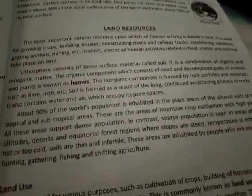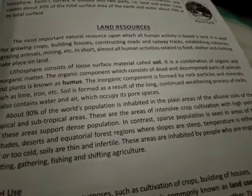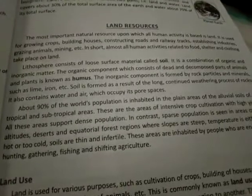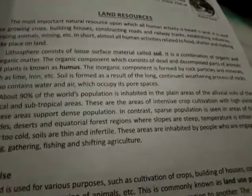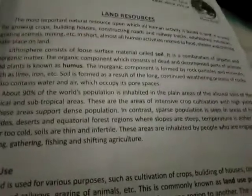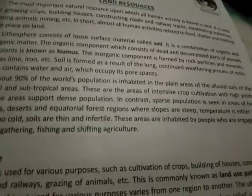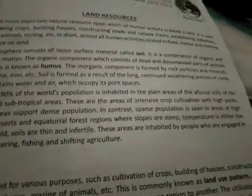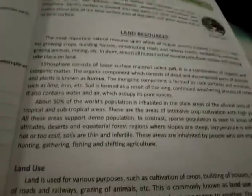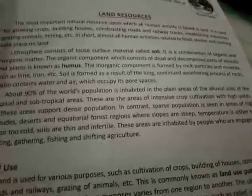In contrast, sparse population is seen in areas of high altitudes, deserts, and equatorial forest regions where slopes are steep and temperature is either too hot or too cold, and soils are thin and infertile. These areas are inhabited by people engaged in hunting, gathering, fishing, and shifting agriculture.